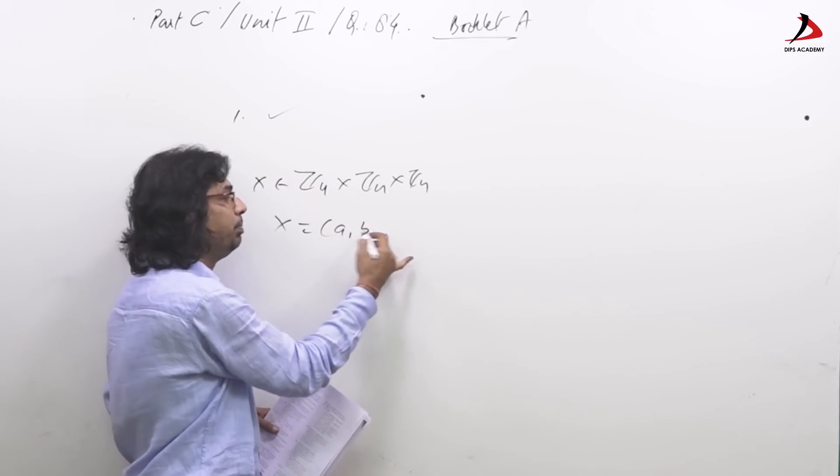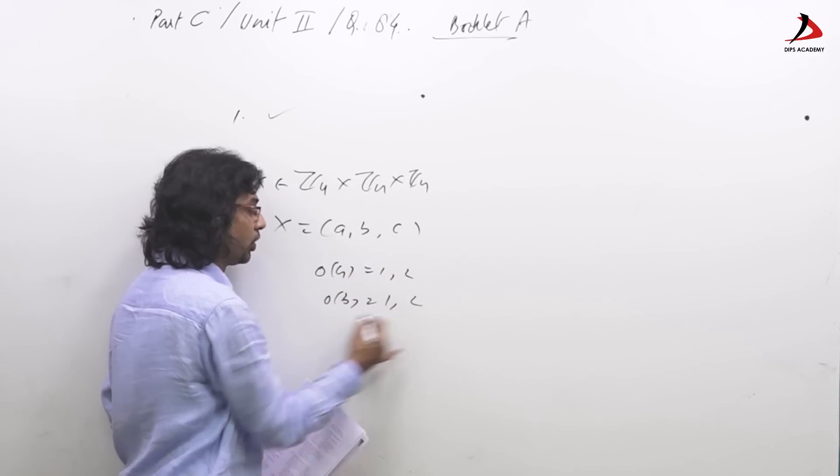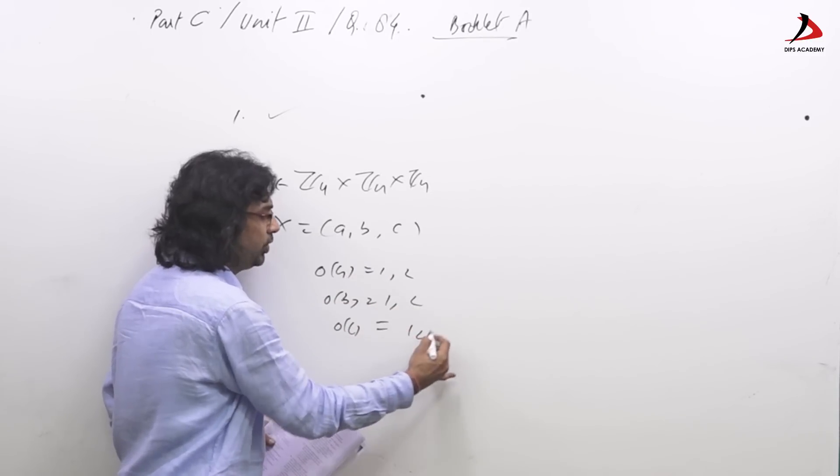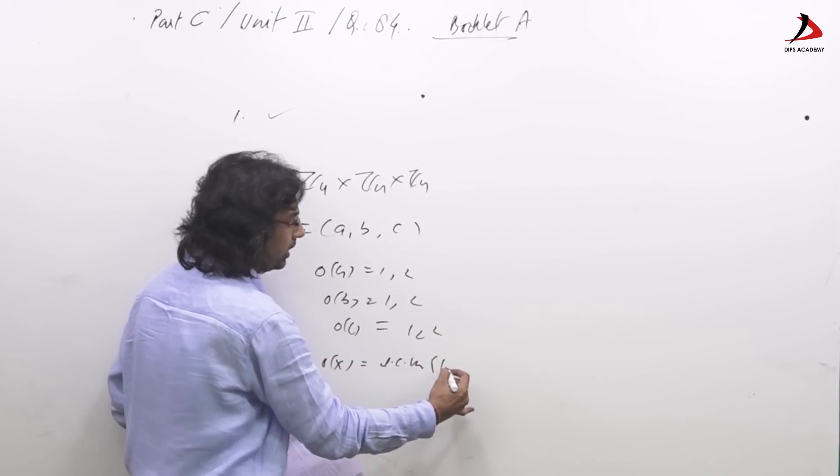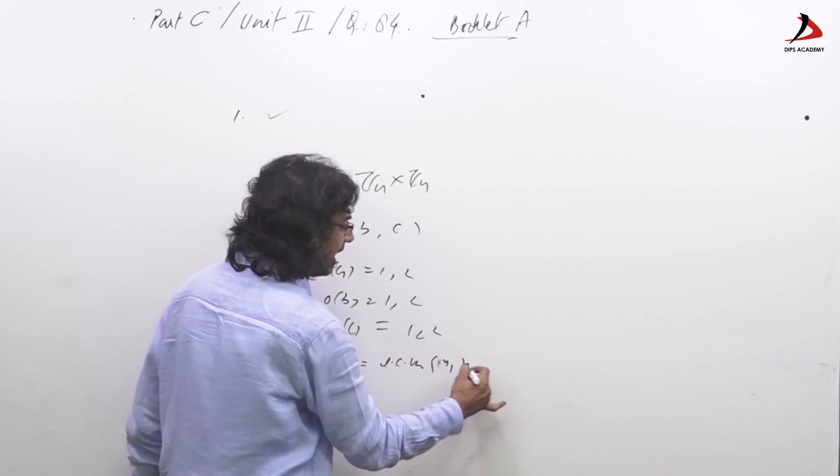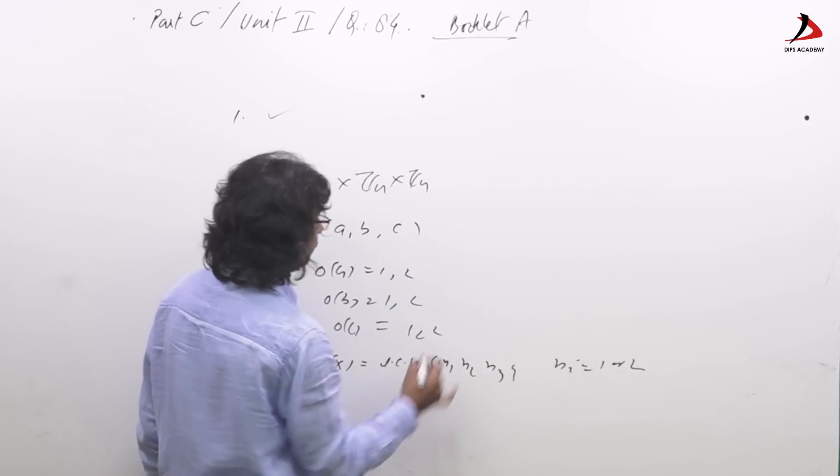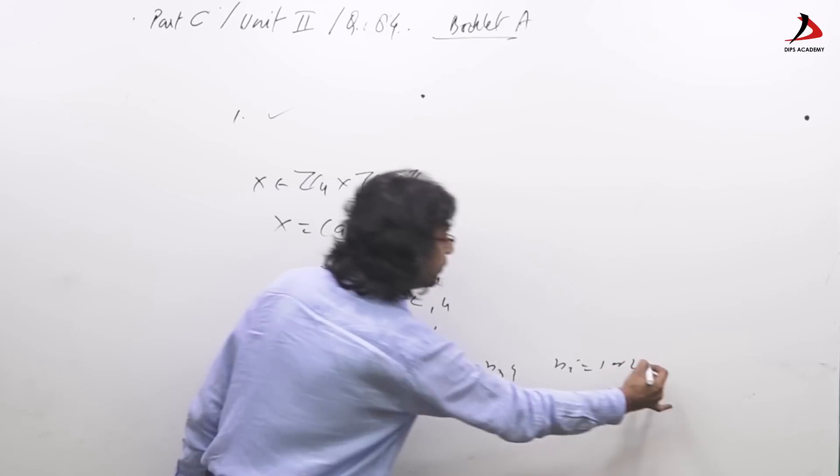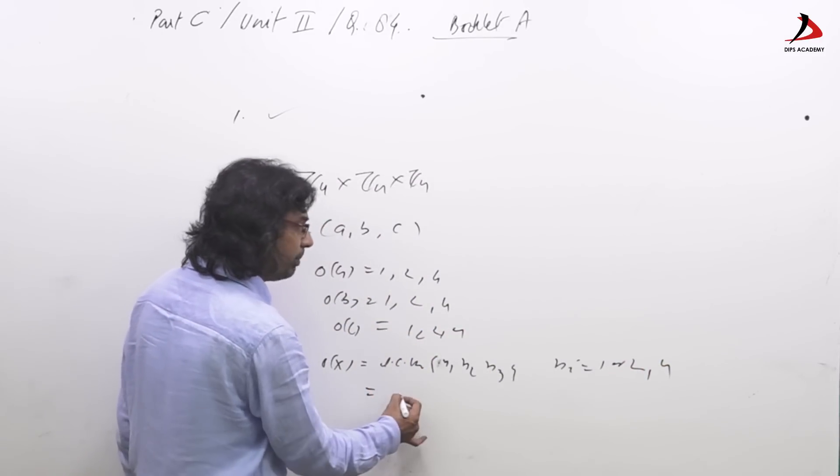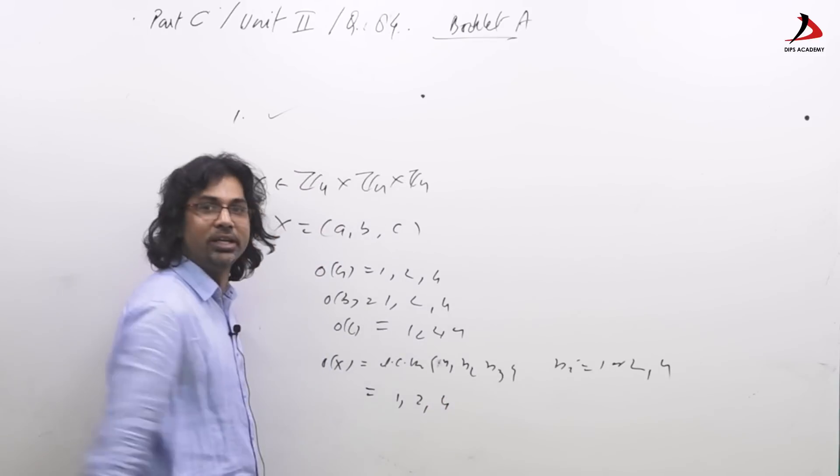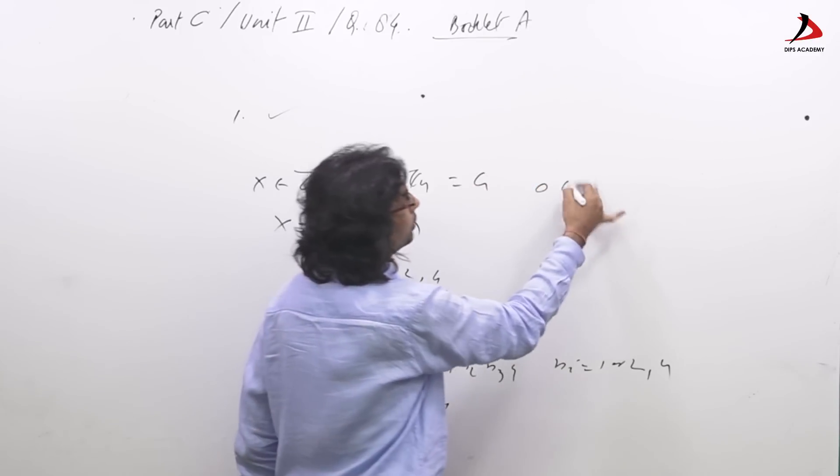That we know if x belongs to this, x is of the form abc and then order of a can be 1, 2, order of b can be 1, 2, order of c can be 1, 2 only. And then order of x is equal to lcm of n1, n2, n3 where n_i equal to 1 or 2, which has 1, 2 and 4. So possible this can be either 1, 2 and 4 only.